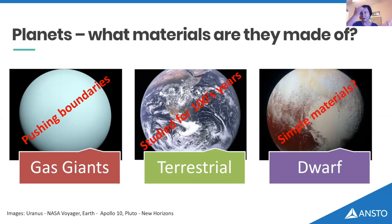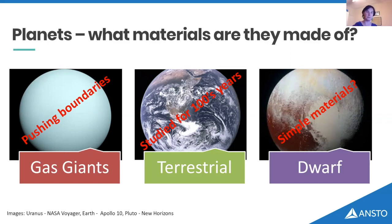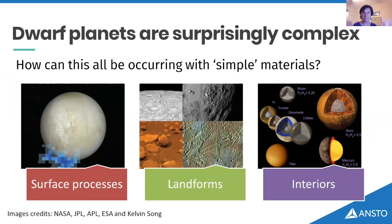We also have a whole suite of smaller planets made of simpler materials — mainly things like water ice, so just oxygen and hydrogen, methane, and ammonia. All very small molecules. But despite the fact they're small and in many terms simple, we do see a massive range of surface processes and things going on.